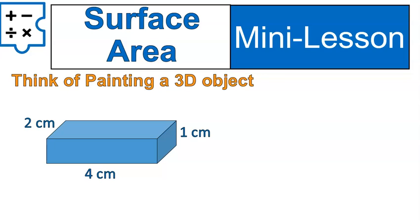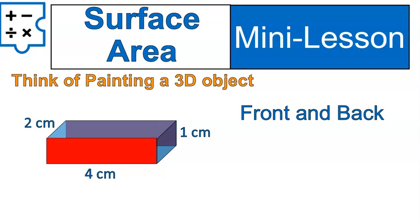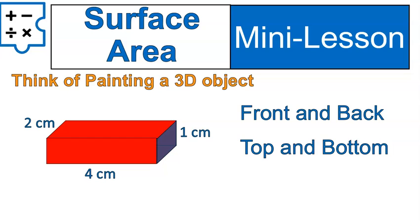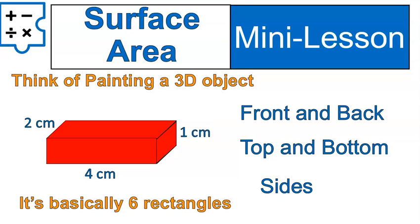If you look at the parts, there are the front and back, which I've labeled with those red rectangles. There's the top and bottom, and then we've got the sides, which include the side you can clearly see and the other side that is hidden. These are the faces of this three-dimensional figure — basically six rectangles, if you think about it that way.